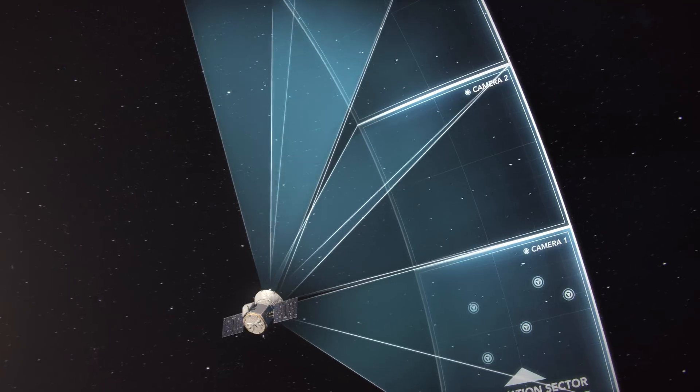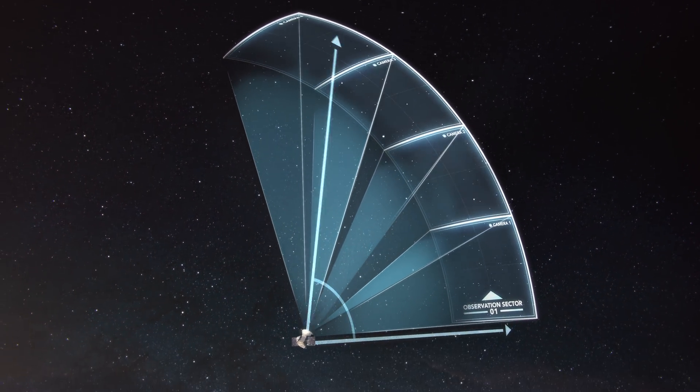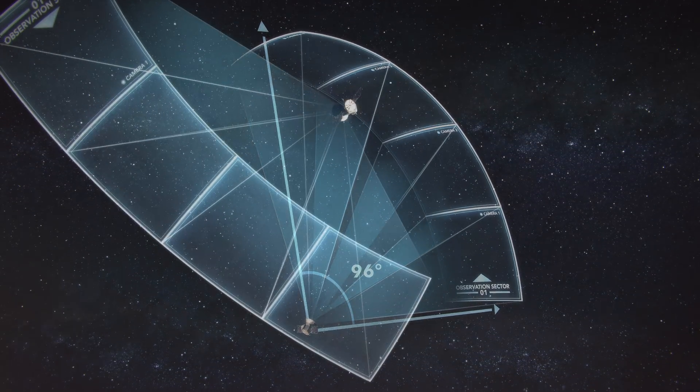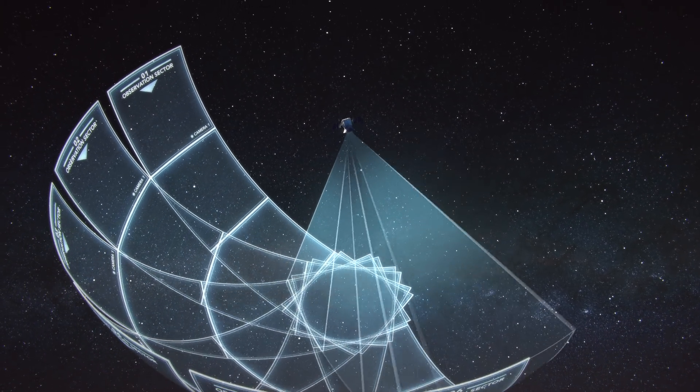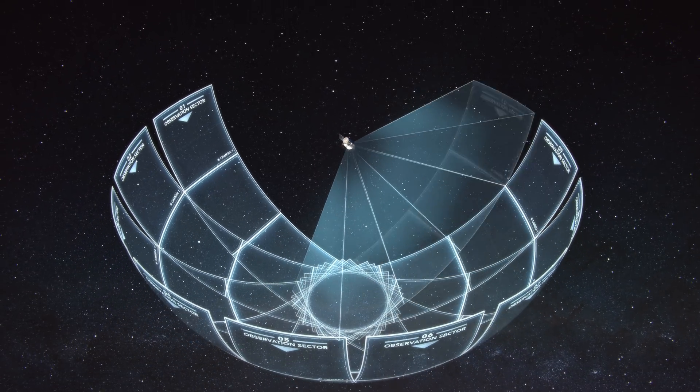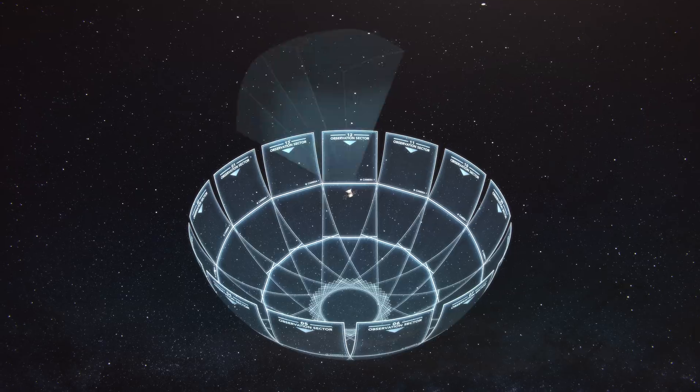TESS has four of these cameras arranged to view a long strip of the sky called an observation sector. TESS will watch each observation sector for about 27 days before rotating to the next. It will cover the southern sky in its first year, and then begin scanning the north.